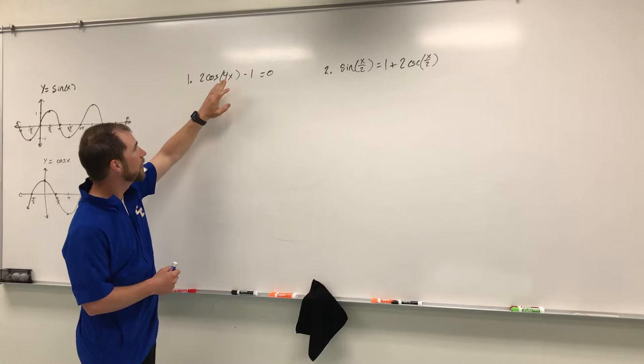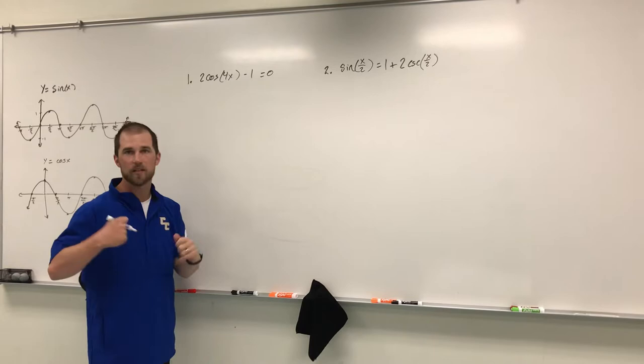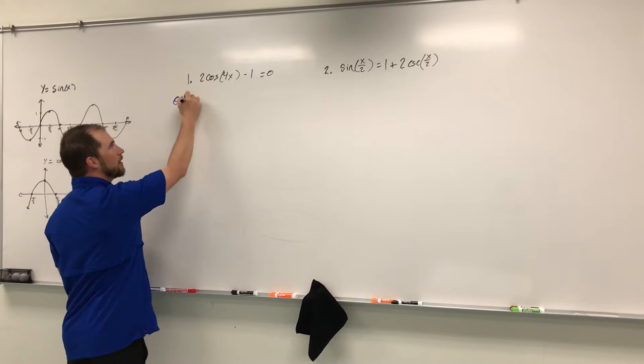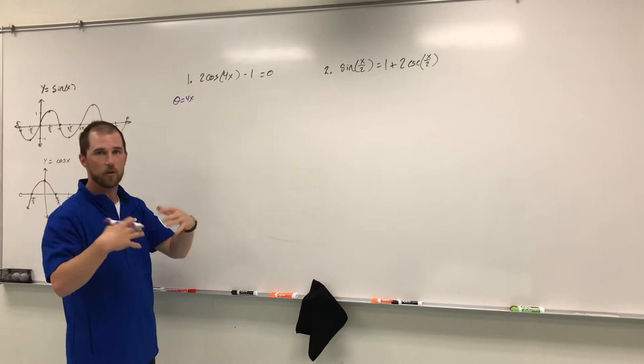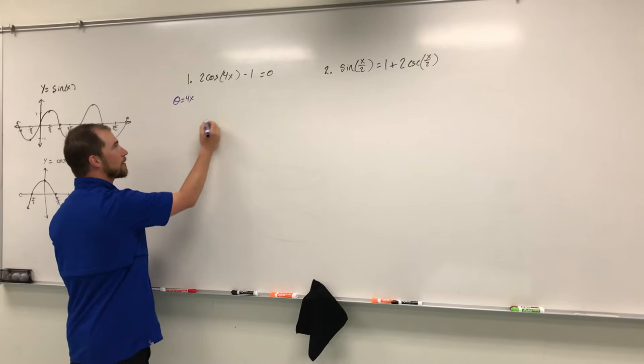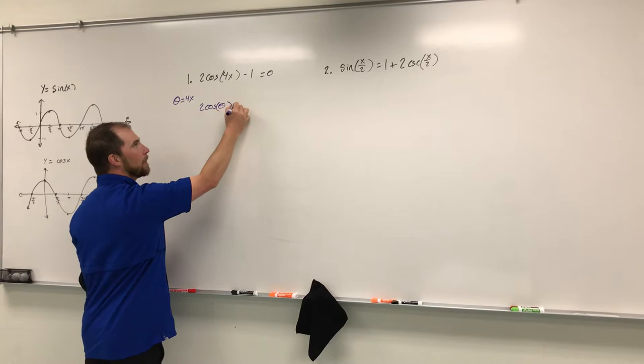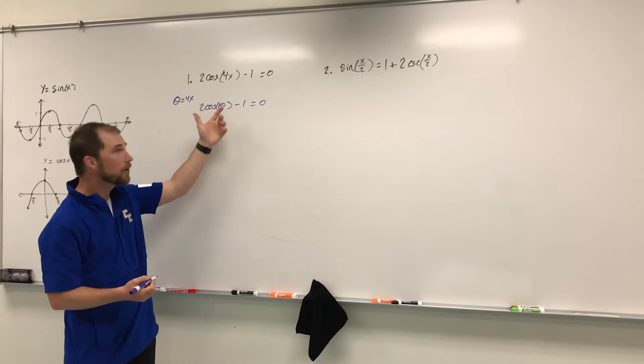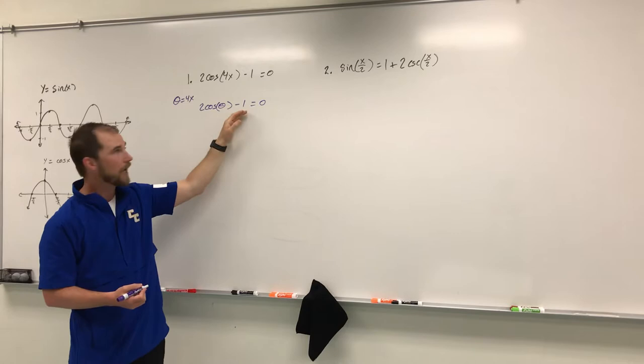I want to think about the 4x as just an angle. Instead of writing 4x, I'm going to substitute it — I'll say theta equals 4x. So instead of writing 4x, I'm going to solve for theta first, and then at the end we'll substitute 4x back in for theta. This gives us 2 cosine theta minus 1 equals 0.